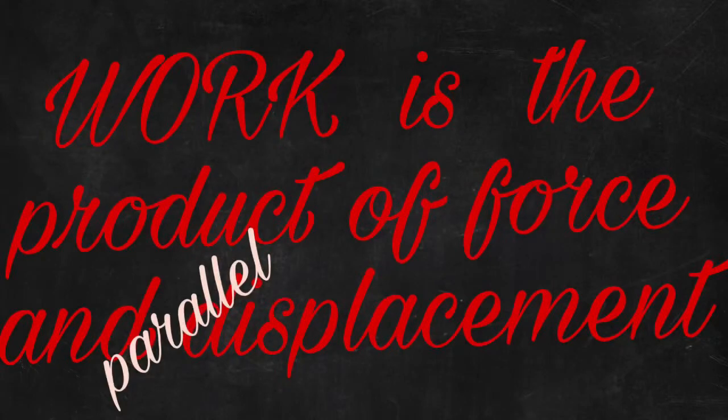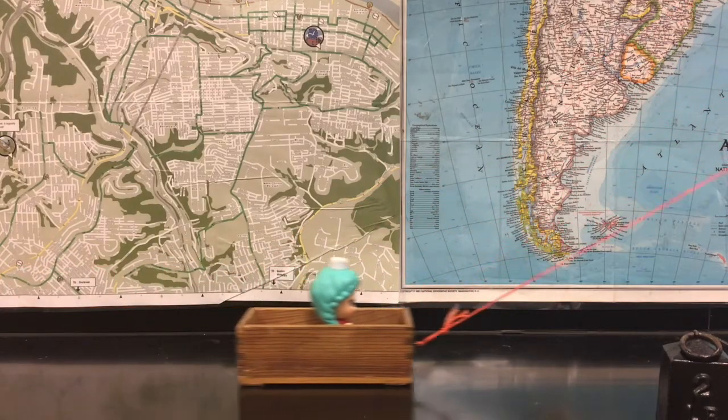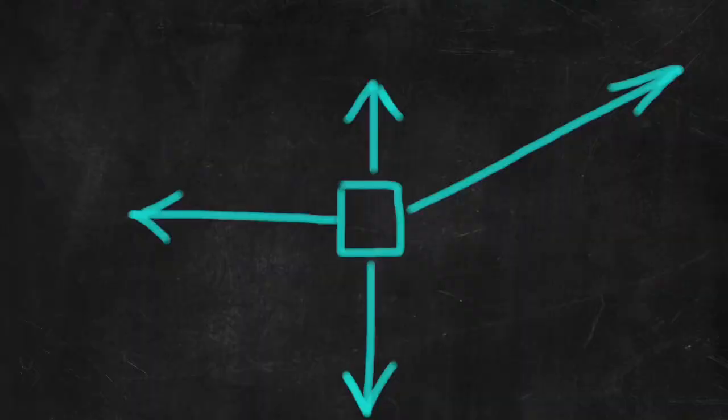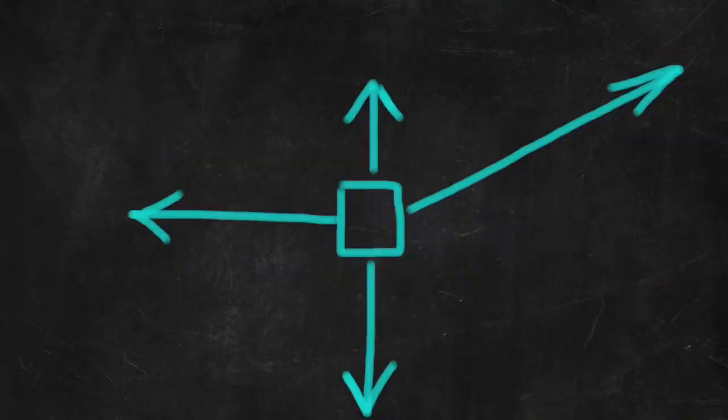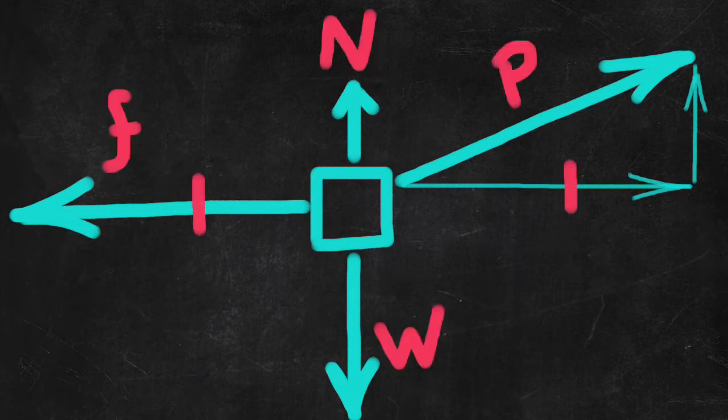All right. Almost done. Just a couple more situations. Now the force is pulling up at an angle like that. That pulling force is both to the right and up. So you'll have to find the components. But we do know that the x component of the pulling force is balanced with the friction force because of the constant velocity.